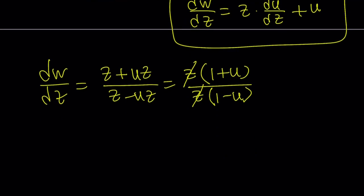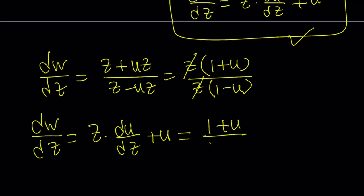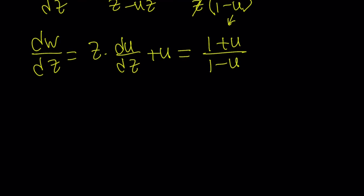Now is the time to replace dw over dz with this expression right here. Okay? Let's go ahead and do it. So, dw over dz is equal to z times du over dz plus u, and that is equal to 1 plus u over 1 minus u from here. Awesome. This is what we were trying to get.